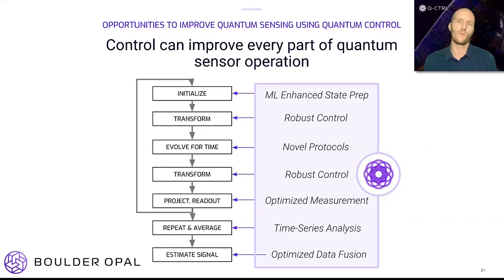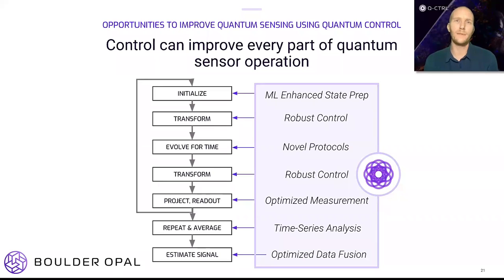This is the typical protocol for most quantum sensors, and quantum control can help to improve every step. All three activities of system identification, control design and performance verification in concert can unlock adaptive, self-certifying and autonomous quantum sensing, where unanticipated changes to the signal and environment are identified and accounted for in real-time. Quantum control solutions can enhance state preparation using machine learning during initialization, combat dominant sources of failure with robust controls during transformation steps, and optimize state readout and signal filtering during measurement. Data fusion can also deliver more information from hybrid quantum and classical sensors.